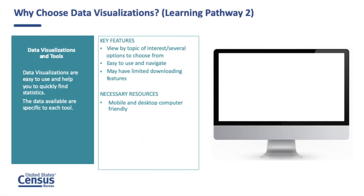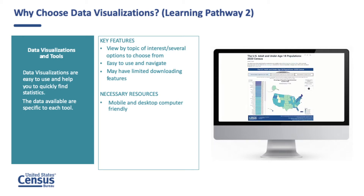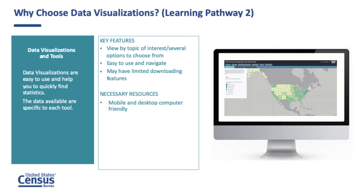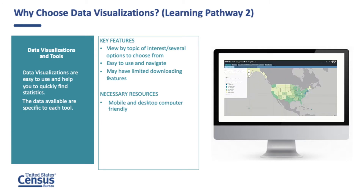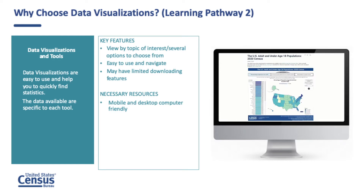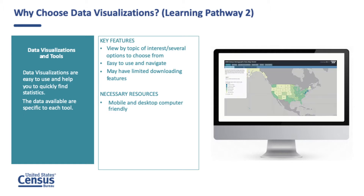Data visualizations are an excellent choice for someone who wants an easy and quick way to access the data and identify trends about a particular topic. Each of the 2020 census redistricting data visualizations offers unique features and topics such as population, race and ethnicity, voting age, and housing data. Some allow you to compare 2010 to 2020 decennial census statistics. Different from the FTP and data.census.gov, when accessing data from a visualization, you're only able to interact with the data while using the visualization since in most cases you cannot download the data. On the other hand, by visualizing the data on a map, it becomes easier to spot trends.